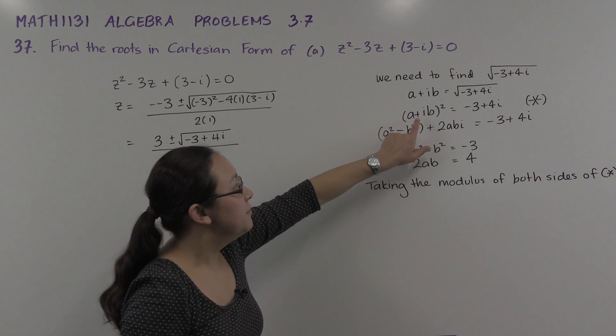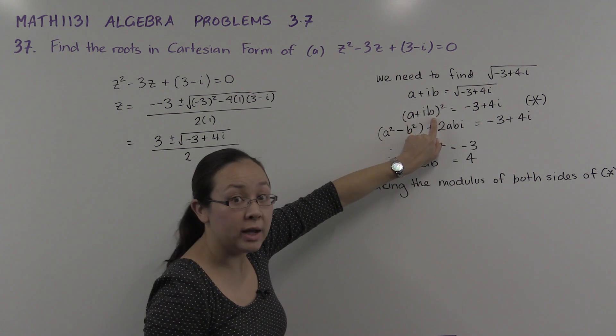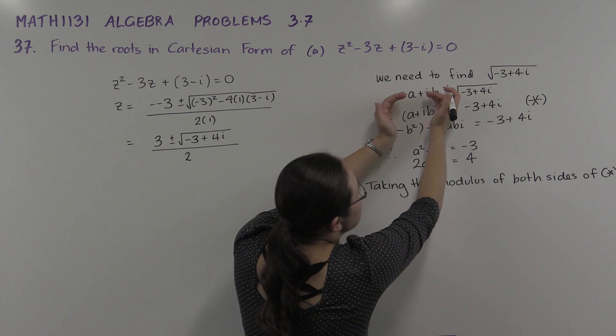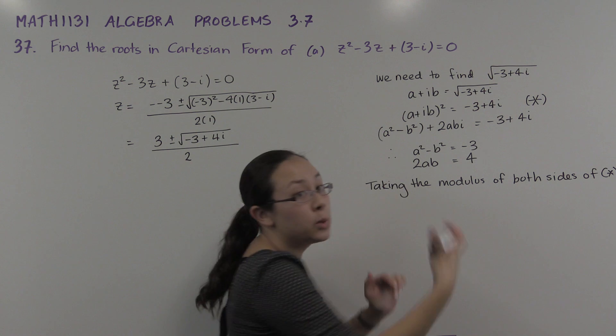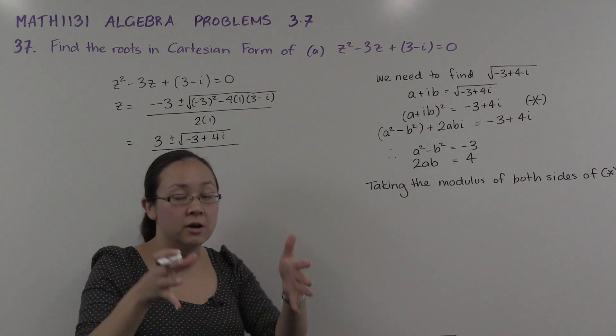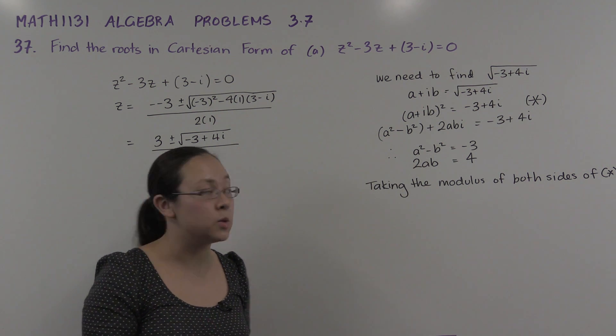So if I take the modulus of (a + ib)², that's actually |a + ib|². That's a property of complex numbers there. The modulus of z² is the same as the modulus of z squared.